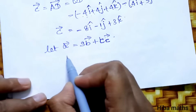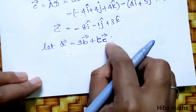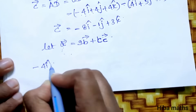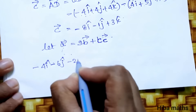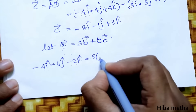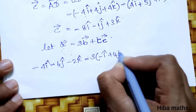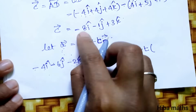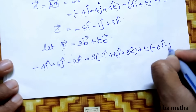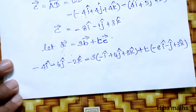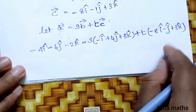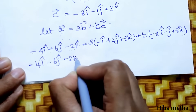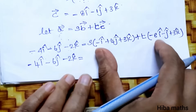For coplanarity, AD vector = s times AB vector plus t times AC vector. Substituting: -8i - j + 3k = s(-4i - 6j - 2k) + t(-i + 4j + 3k). Now split by i, j, k components. So we equate the i, j, k terms on both sides.